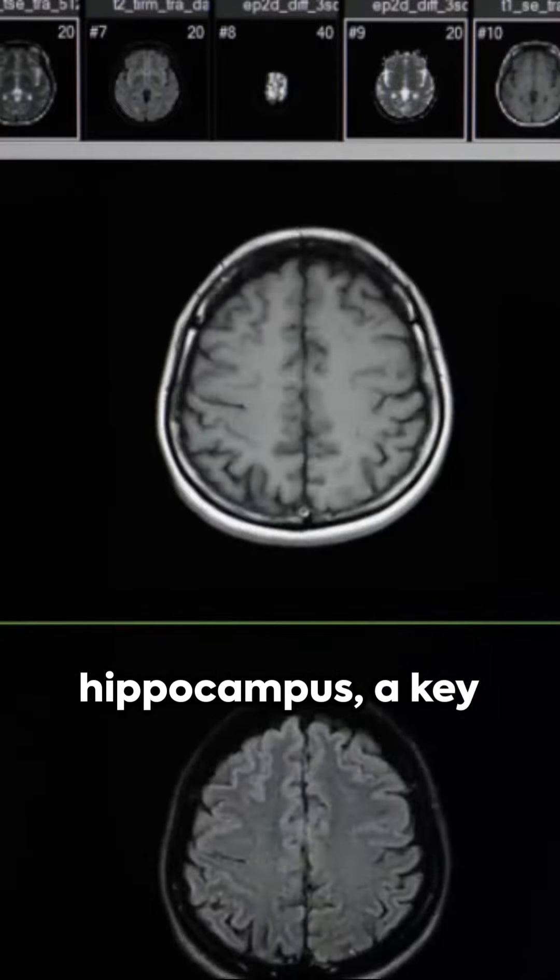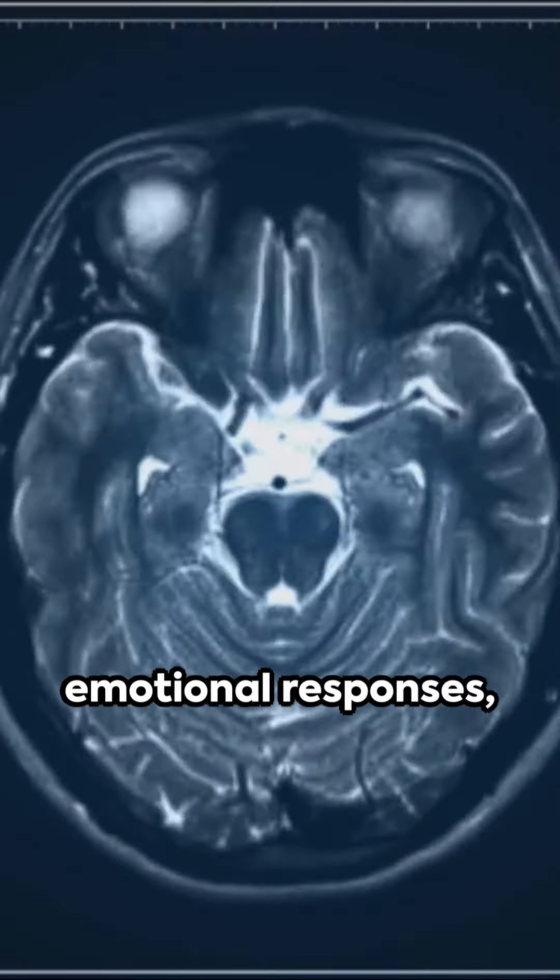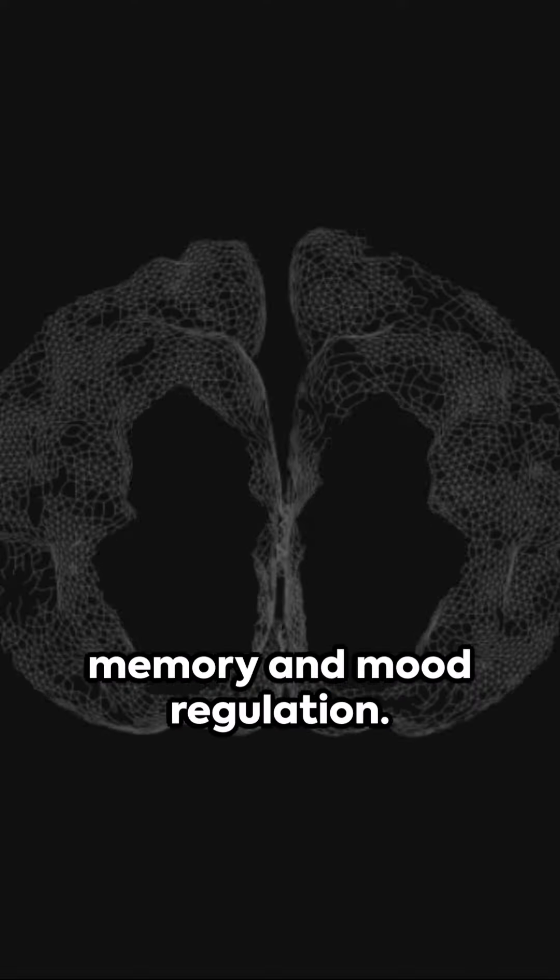Additionally, the hippocampus, a key player in memory and emotional responses, can shrink in those with depression, influencing both memory and mood regulation.